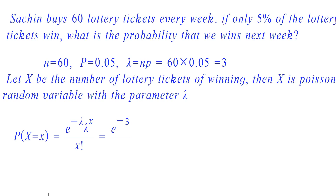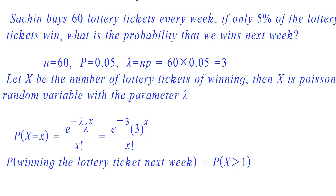Substituting lambda equal to 3 in the formula, we get e raised to minus 3 into 3 raised to x by x factorial. Now we need to find the probability of winning lottery tickets in the next week. Here Sachin buys 60 lottery tickets. There is a probability that either 1 or 2 or 3 or all tickets he bought wins the prize. Therefore, we need to find the probability of x greater than or equal to 1, which equals probability of x equal to 1 plus probability of x equal to 2, up to probability of x equal to 60.